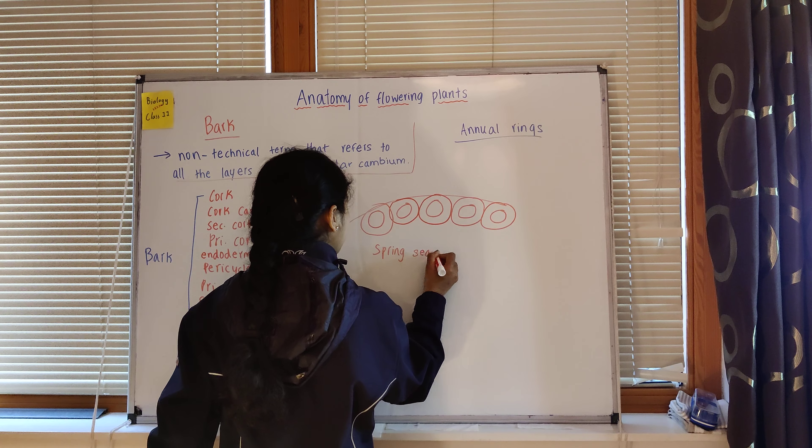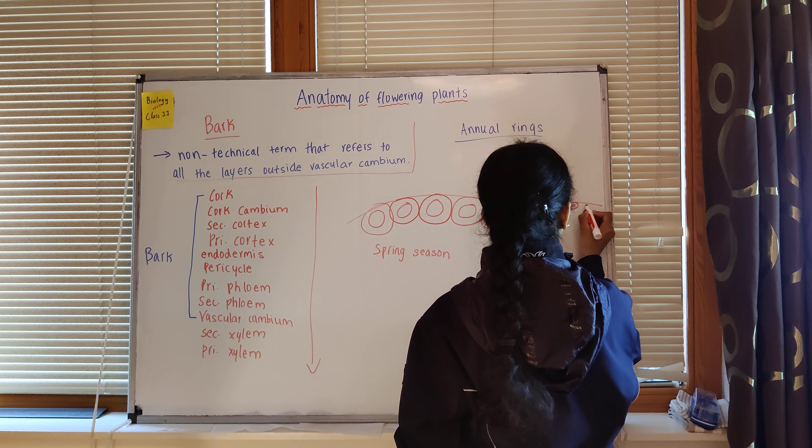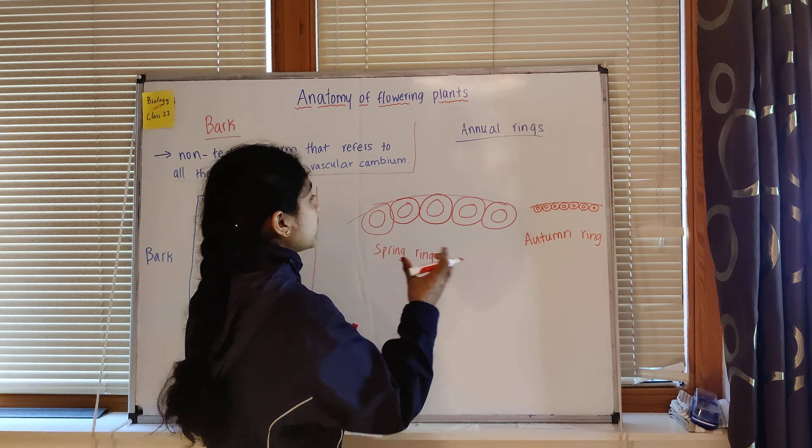During winter or autumn, the conditions are unfavorable, so the rings formed are going to be smaller compared to the spring season. The spring ring and the autumn or winter ring are the two components. This is called the spring ring and the autumn ring.